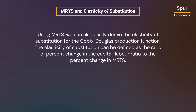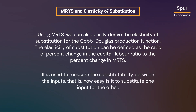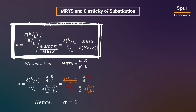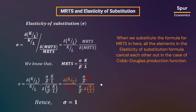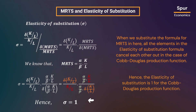Using MRTS, we can also easily derive the elasticity of substitution for the Cobb-Douglas production function. The elasticity of substitution is defined as the ratio of the percent change in the capital-labor ratio to the percent change in MRTS. It is used to measure the substitutability between inputs — that is, how easy it is to substitute one input for the other. When we substitute the formula for MRTS into this expression, all the elements in the elasticity of substitution formula cancel each other out. Hence, the elasticity of substitution is equal to one for the Cobb-Douglas production function.